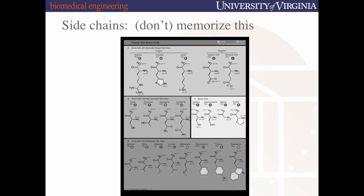The point is not to memorize the structure of every amino acid but to get a handle on the classes that exist. We have amino acids with charged side chains — positive or negative. We have polar amino acids with no charge. There are special cases, and there are hydrophobic side chains. Think about them in these classifications: positive charge, negative charge, hydrophobic, hydrophilic. These side chain characteristics are going to drive how polypeptides begin to take shape as their side chains interact with one another.